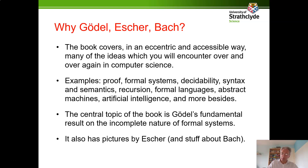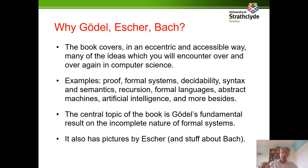The central topic of the book is Gödel's fundamental result on the incomplete nature of formal systems, and Hofstadter compares that to the human mind and thinks about how it impacts artificial intelligence. There are also lovely pictures by Escher and content about Bach, who wrote very interesting music involving repetition and repeating structures.